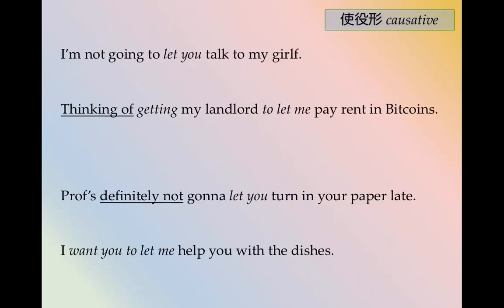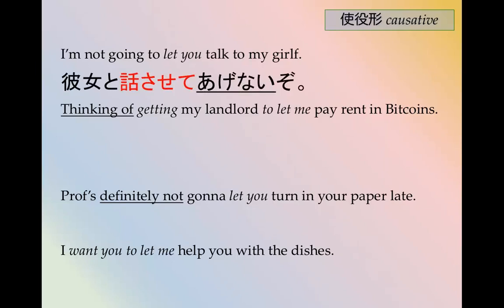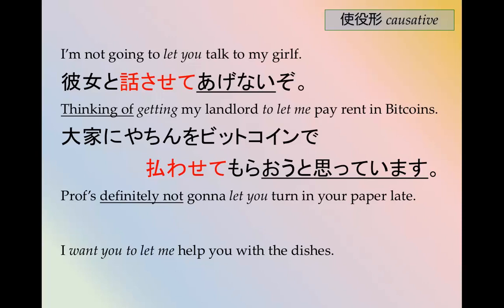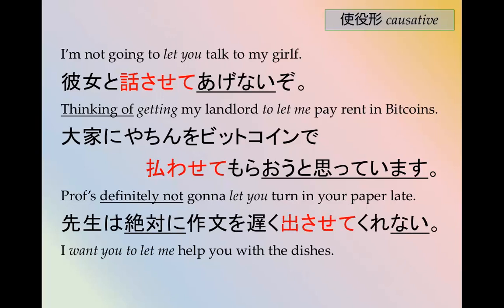A few more examples, because it's a bit difficult and takes getting used to. I'm not going to let you talk to my girlfriend — させてあげる in the negative: 彼女と話させてあげないぞ。 I'm thinking of getting you to let me pay rent in Bitcoin — volitional plus 思っている: 親に家賃をビットコインで払わせてもらおうと思っています。 The professor is definitely not going to let you turn in your paper late — させてくれる in the negative: 先生は絶対に作文を遅く出させてくれない。